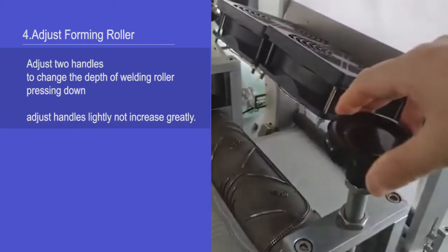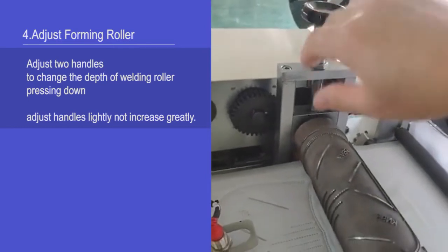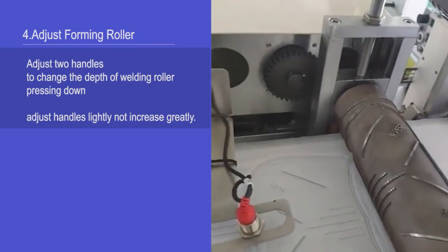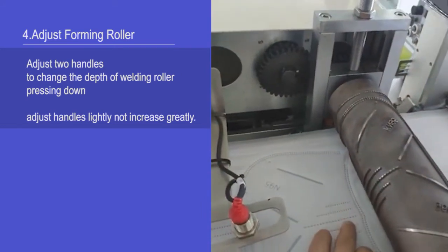Adjust the forming ruler. Adjust two handles to change the depth of welding ruler pressing down. Adjust the handle slightly, not increase greatly.